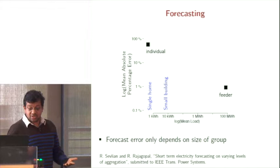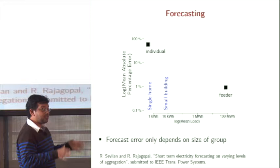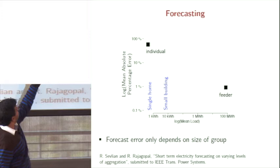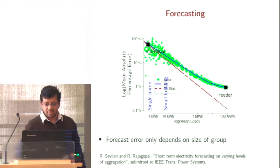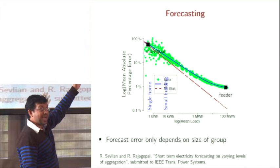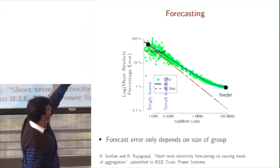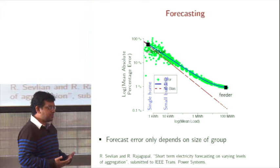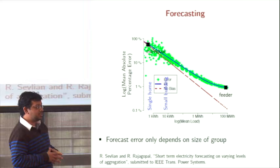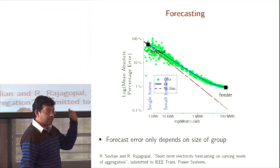We decided to do a scaling exercise where we added a bunch of residential customers together to create an artificial group and predict them as a group, plotting forecast error versus group size. The rate at which error decreases is one-half — like averaging Gaussian random variables together. But at some point, your forecasting model error bias takes over and that improvement stops. There is some randomness in behavior that gets averaged out when customers are aggregated to a certain extent; beyond a certain point, further aggregation is not necessary anymore.